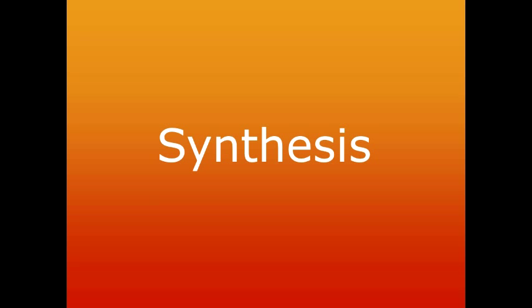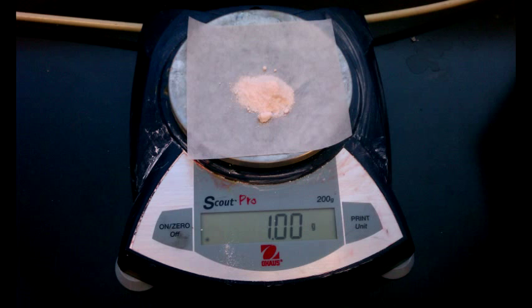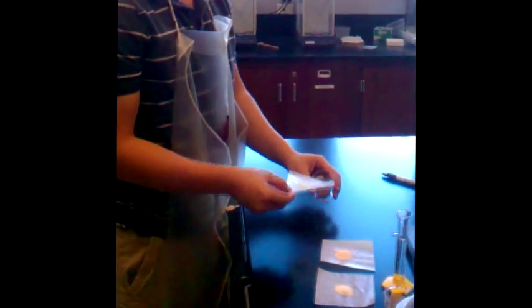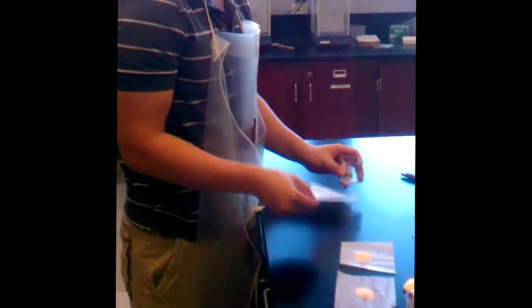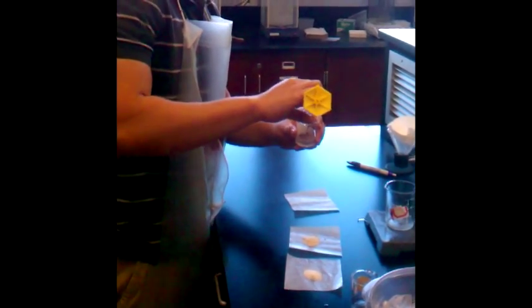We will first begin by weighing out 0.86 grams of ferrous ammonium sulfate and 1 gram of FEN. It is essential that you take the initial weight of both ferrous ammonium sulfate and FEN because they will be used when calculating the theoretical yield. Next, we will take the 0.86 grams of ferrous ammonium sulfate and transfer this to the 50 mL beaker. 10 mL of 1 molar HCl is added to dissolve the crystals. You may stir the solution to dissolve it quicker.